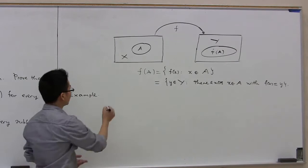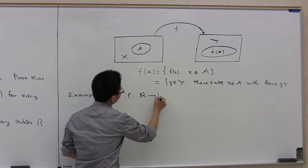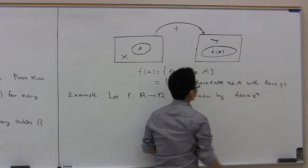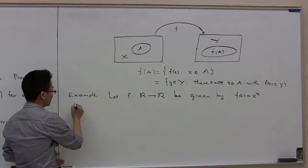To better understand this concept, let's go through an example. We consider the squaring function from R to R. Let f be a function from R to R given by f of x equals x squared. This is the squaring function.